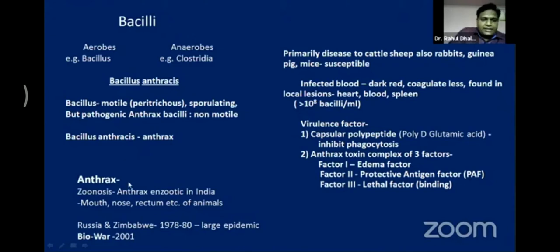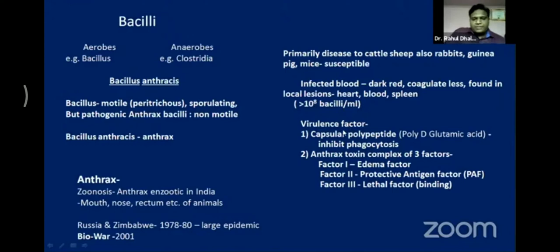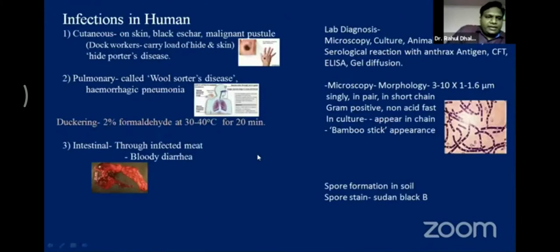Anthrax is a zoonotic disease, primarily affecting vertebrate animals and carried to human beings — similar to plague. These are examples of zoonosis. Infected blood of the animal appears dark red and coagulates less, found in the heart and blood in huge numbers. Virulence factors of anthrax bacilli include capsular polypeptide and three types of toxins: edema factor, protective antigen, and lethal factor.